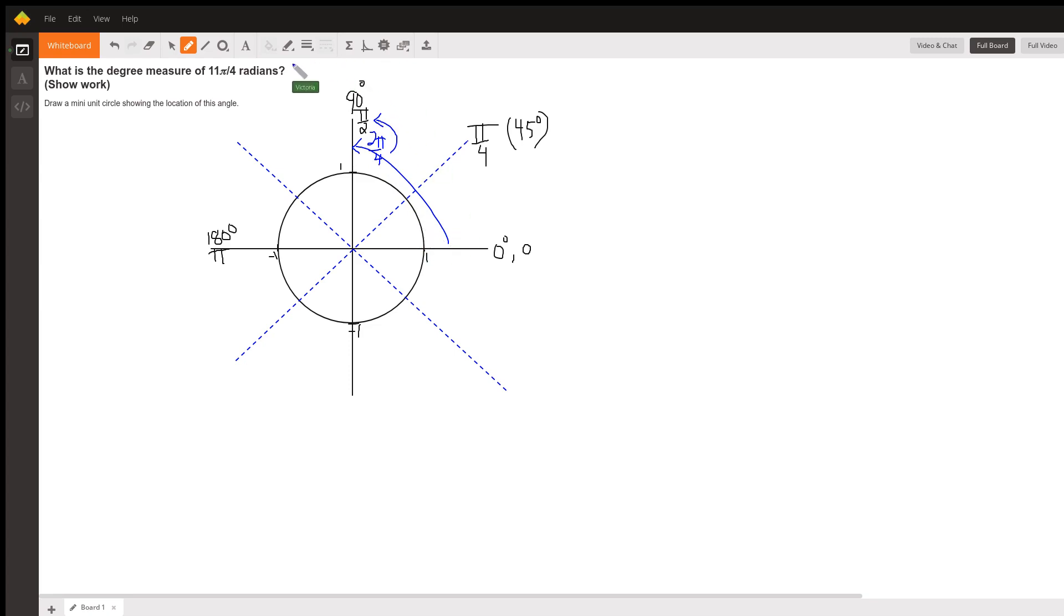When I get to here, I've gone 1, 2, 3π/4. When I get to here, that's 1, 2, 3, 4π/4, which simplifies to π.